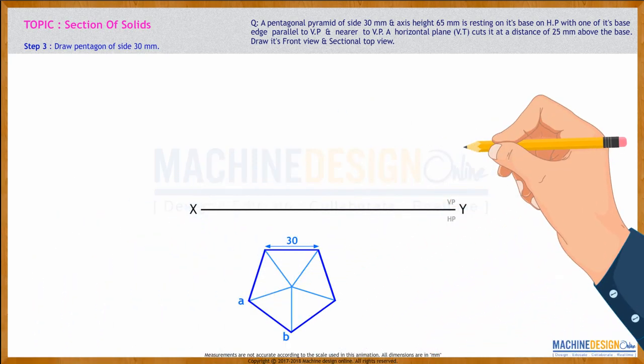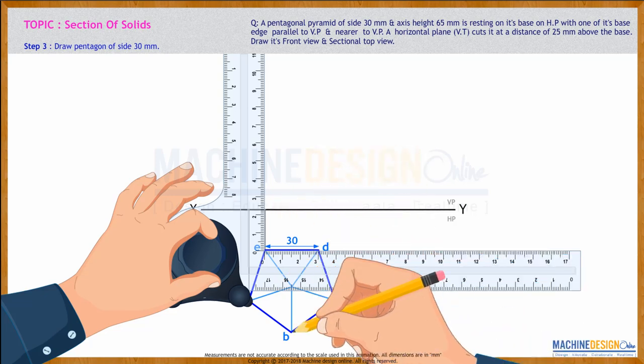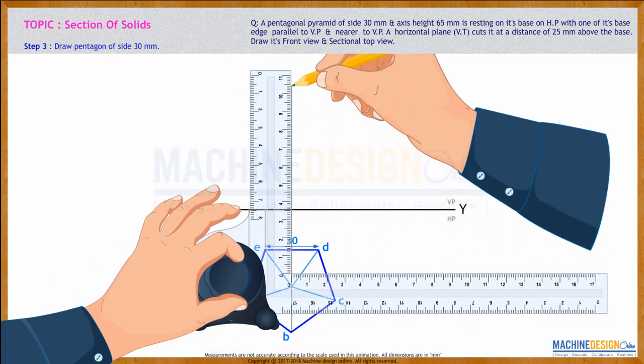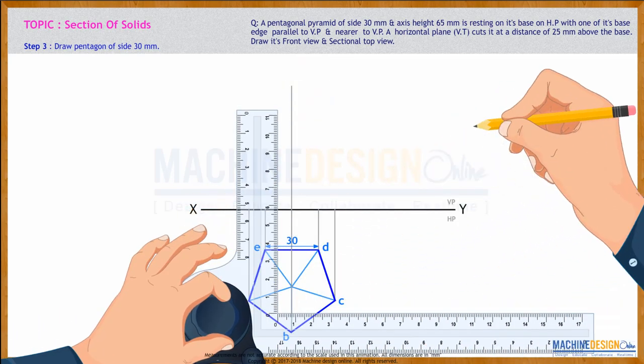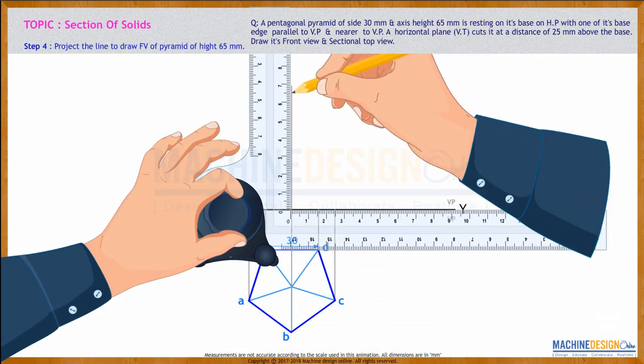This is A, B, C, D, E. Now we draw the front view. We'll take the height, height is how much?